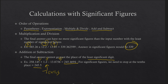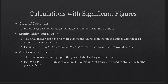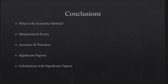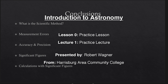To summarize: we looked at making measurements and measurement errors, always including units and error estimates. We discussed accuracy versus precision. We covered significant figures and how to determine them using the flowchart. And we looked at calculations with significant figures. That concludes this video explaining the scientific methods activity. Until next time, have a great day everyone, and I will see you in class.